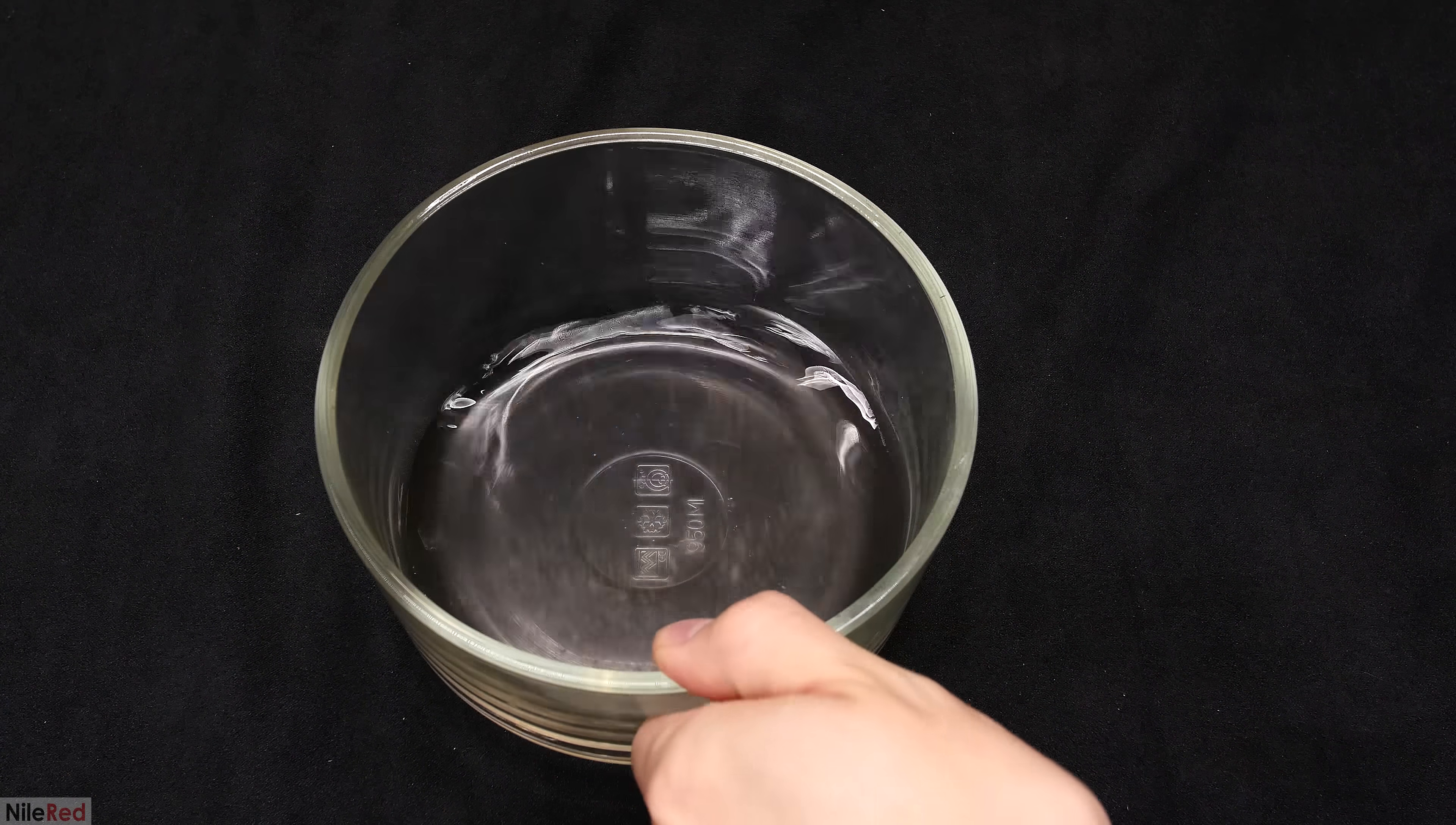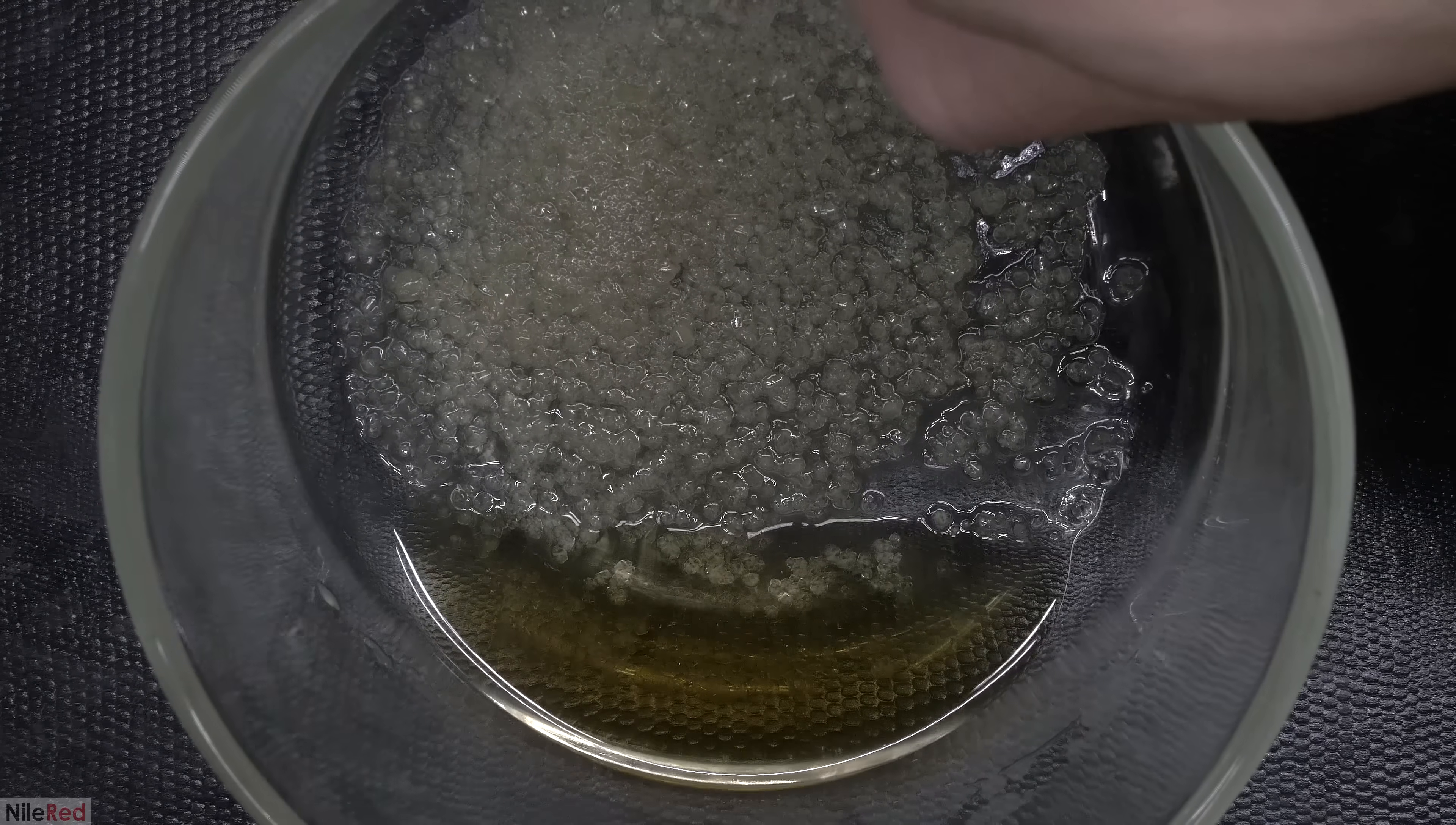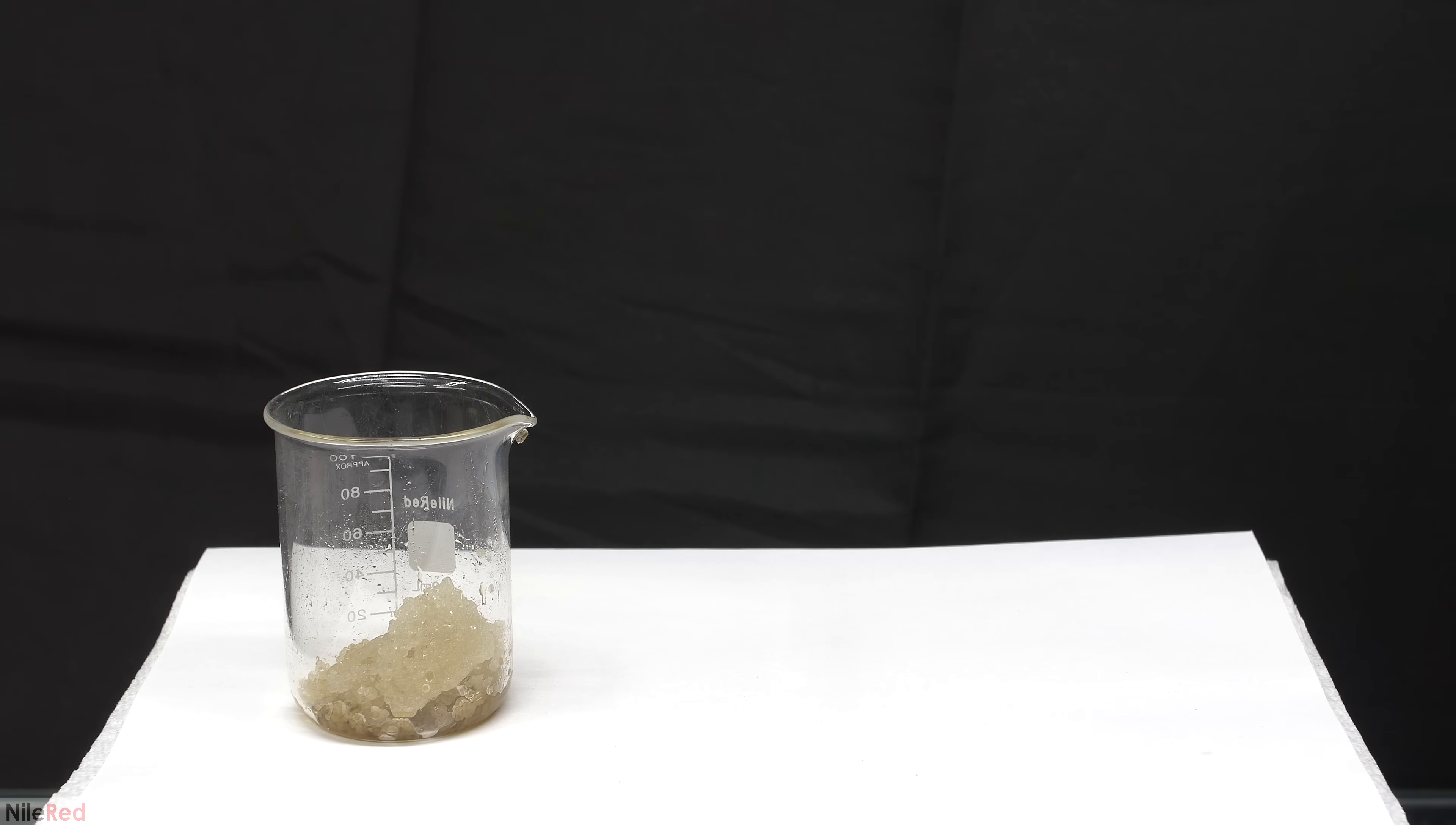After letting it evaporate for about a day we can see that some crystals have started to form. I then left it out for about a week and this is what I saw when I came back. I let it evaporate further for another week and then I transferred the crystals to a small beaker. In the bowl I'm left with a viscous brown goop and this can be discarded. The small amount of crystals that you see in the bowl here were also transferred to the beaker.